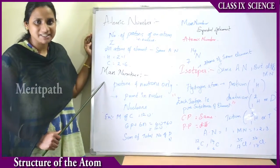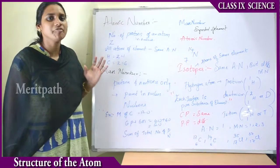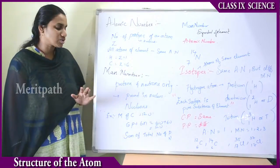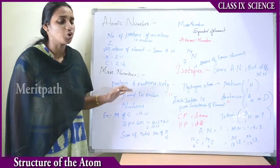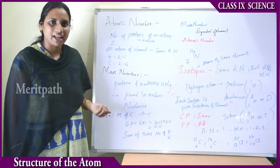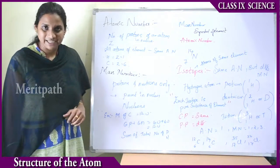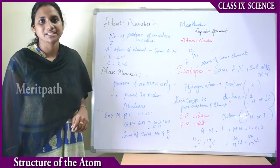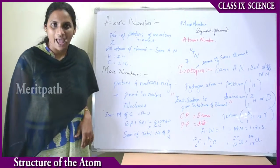Now let us see the mass number of an atom. Mass number is defined as the sum of protons and neutrons only — electrons are not considered. Only the summation of protons and neutrons together is known as the mass number of an element. These protons and neutrons are present in the nucleus and together are known as nucleons.